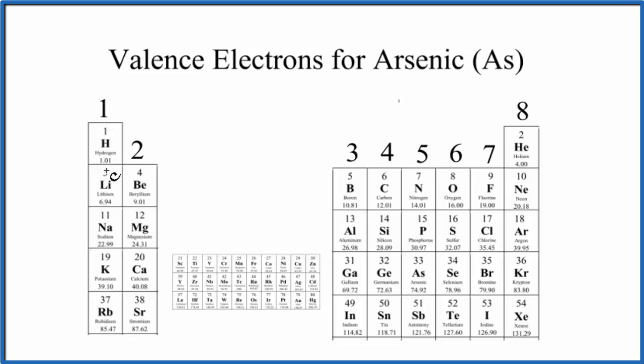With the pattern here, we have group one that has one valence electron. All these elements have one valence electron. Group two, they all have two valence electrons. We skip the transition metals and then group 13 through 18 has three through eight valence electrons.